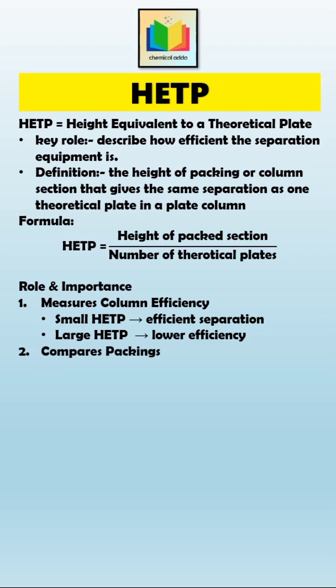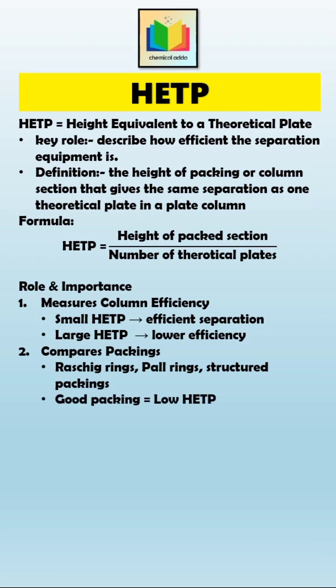Next, HETP is used to compare different packings. For example, materials like Raschig rings, Pall rings, or structured packings all have different HETP values. A good packing has a low HETP, meaning the column performs better with less height.